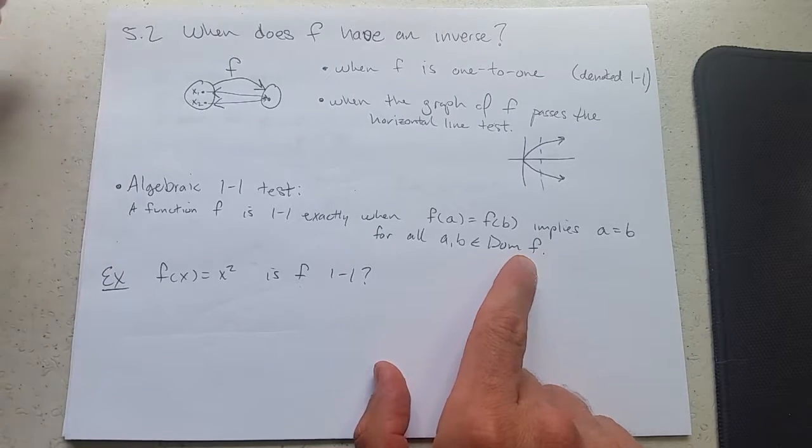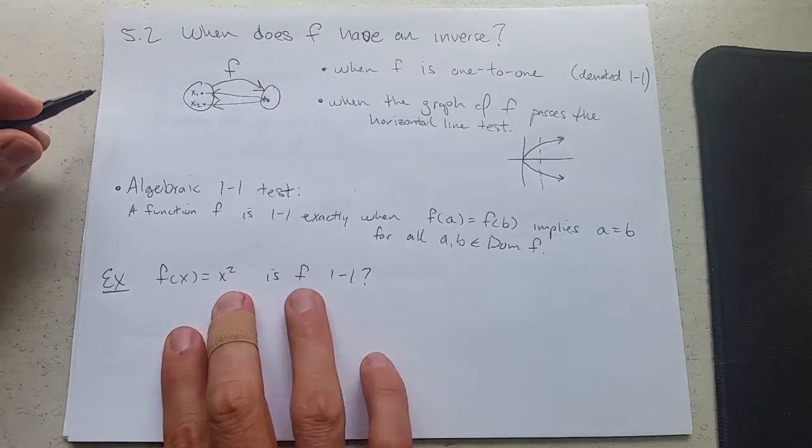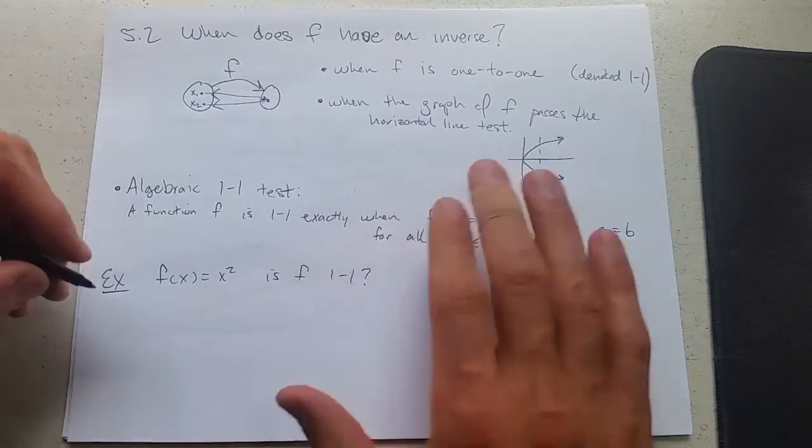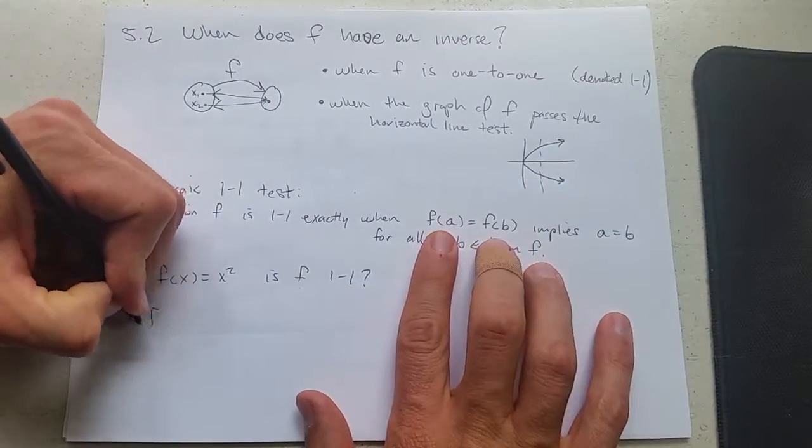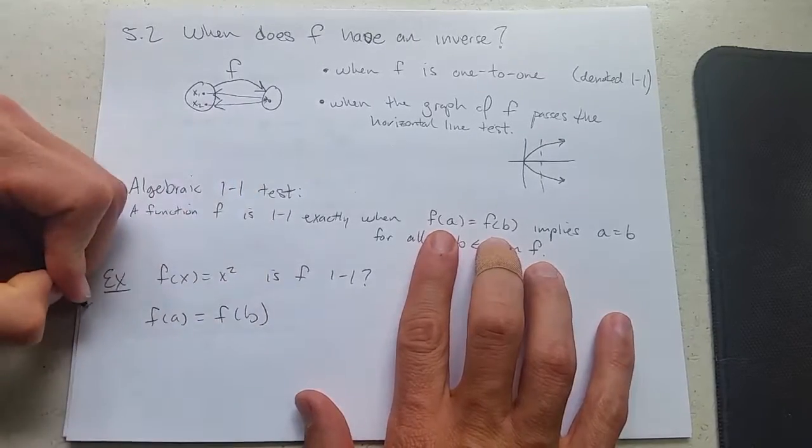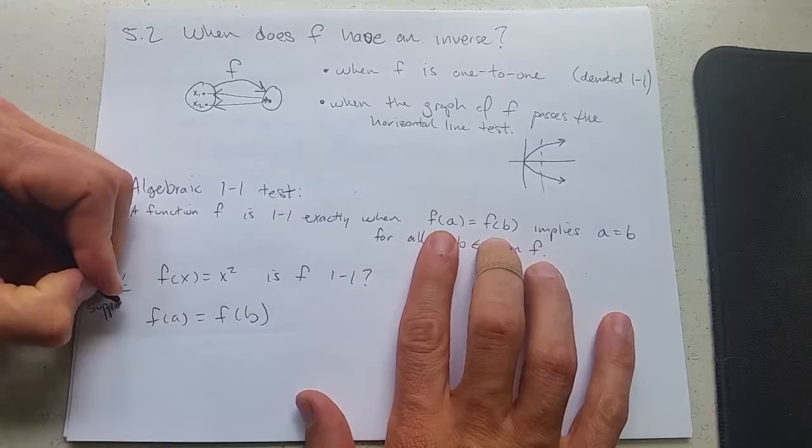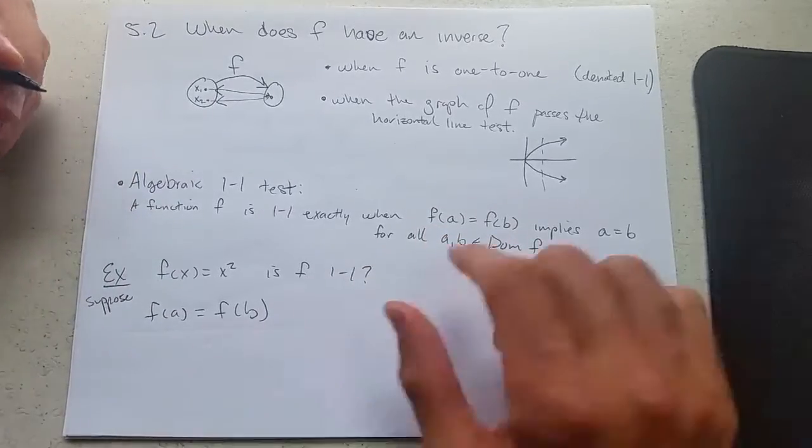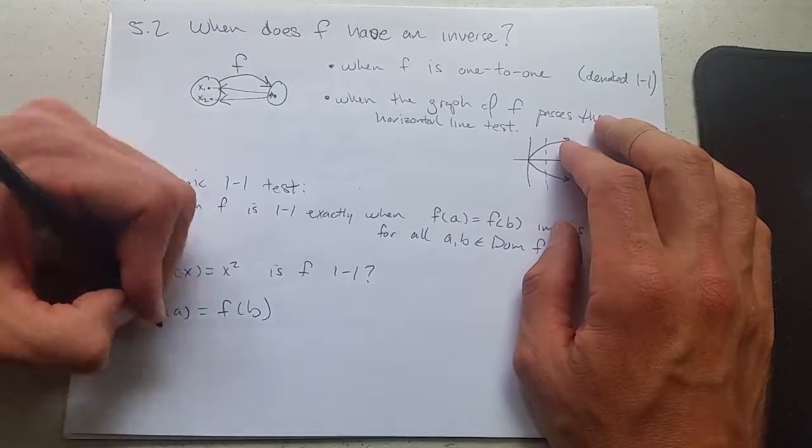So what we're gonna do instead is use algebra. So f of x is x squared - is f one-to-one? I'm going to start out. Suppose f of a equals f of b. What does f do to a?